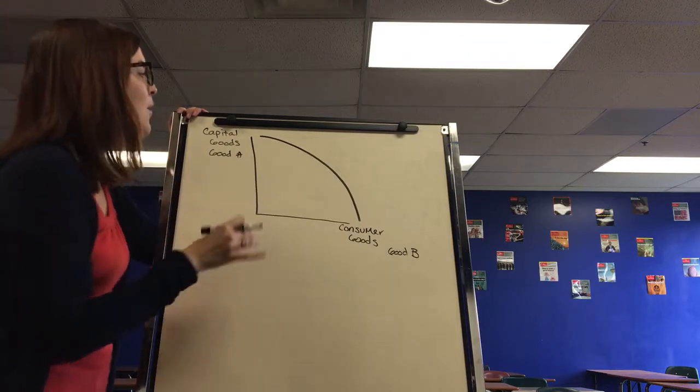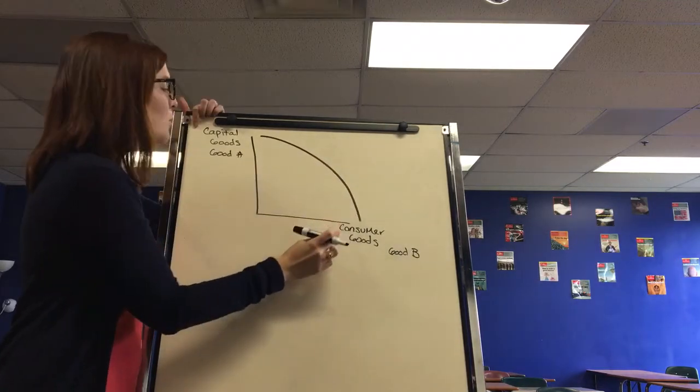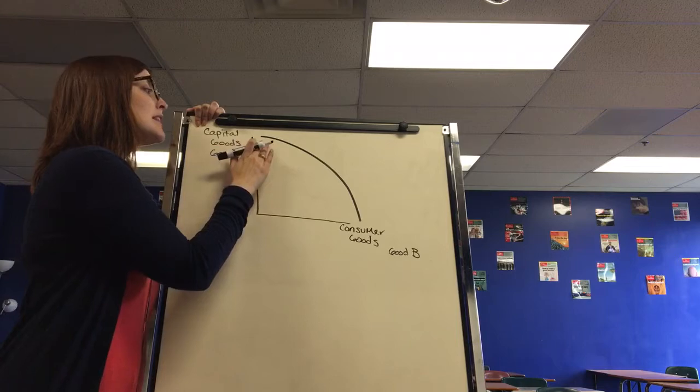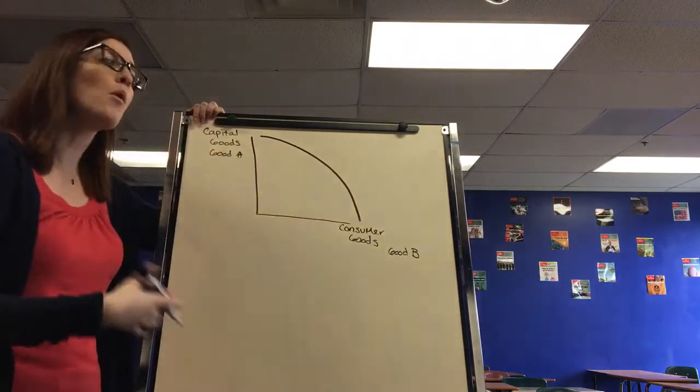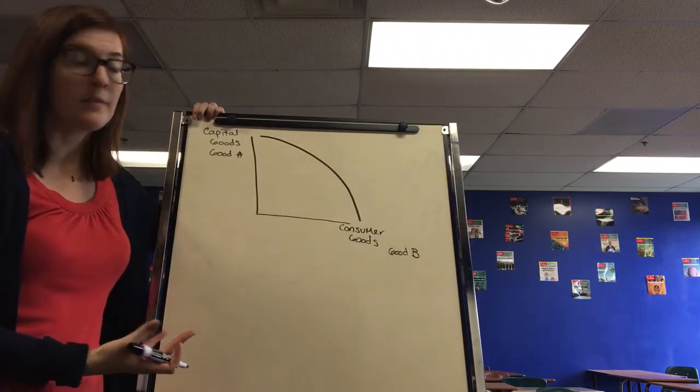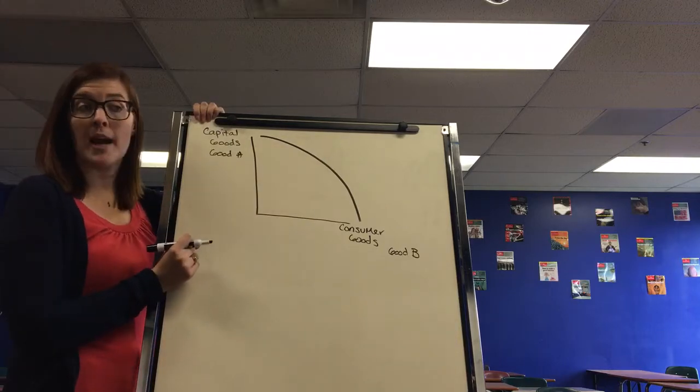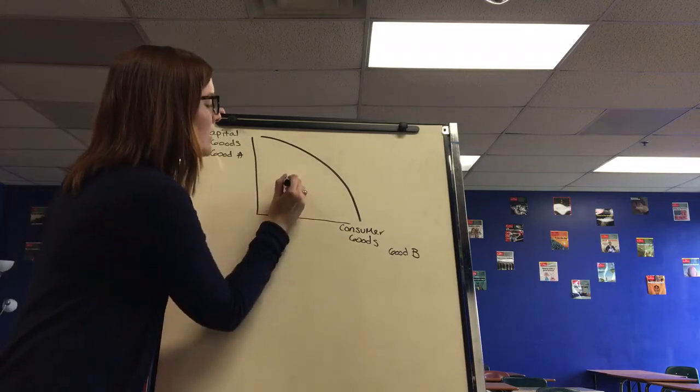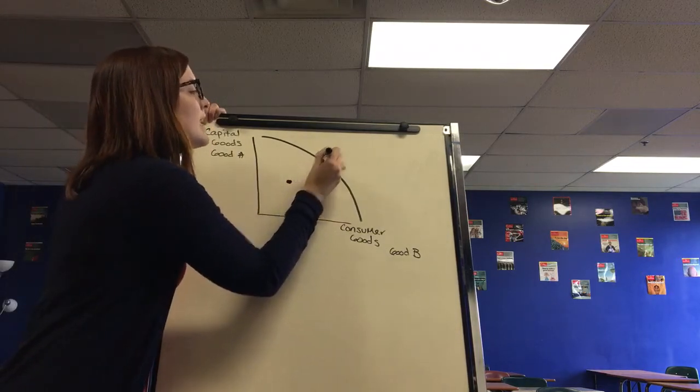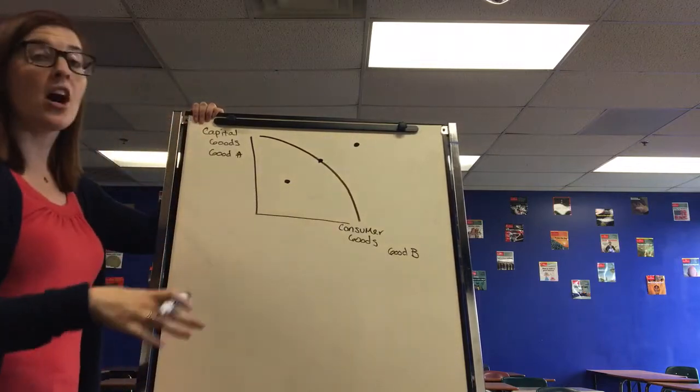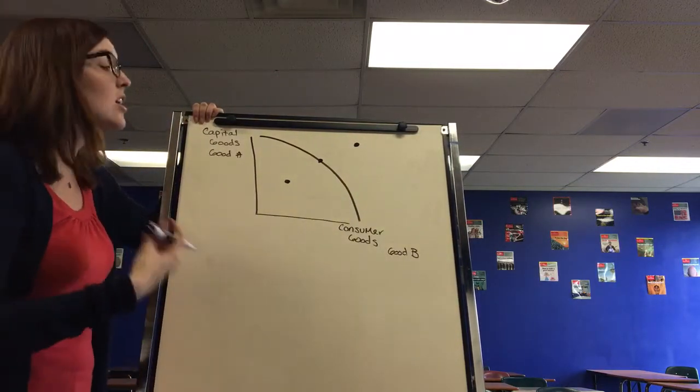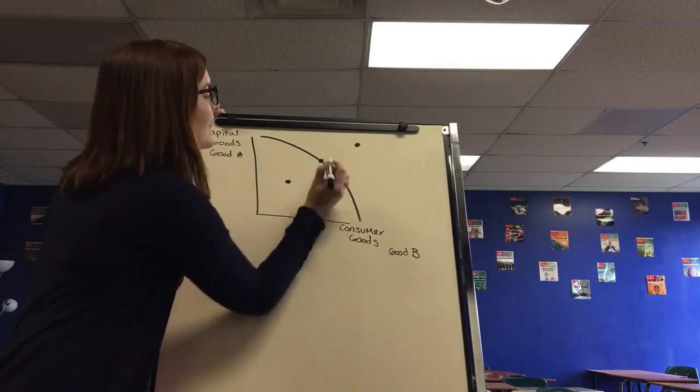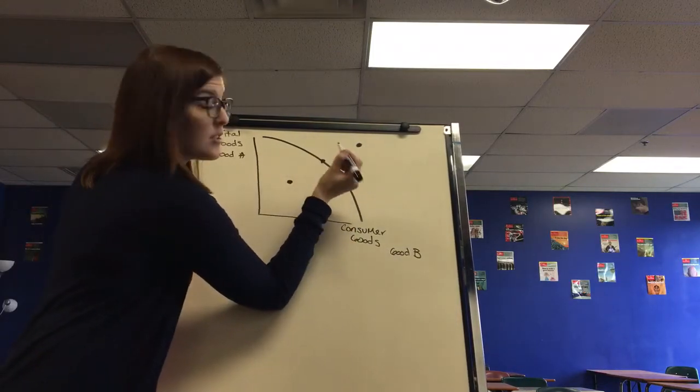Most of the time you'll see it as a bowed out curve, and if you're drawing it that's what you want to draw instead of a straight line because it's more accurate. It's more accurate because of this thing called the law of increasing opportunity cost. That looks at how as we move along the PPC, our resources are not perfectly adaptable. If I want to produce less of Good A and more of Good B, I have to give up more the more of Good B I'm producing, which is why the bowed out curve is more accurate.